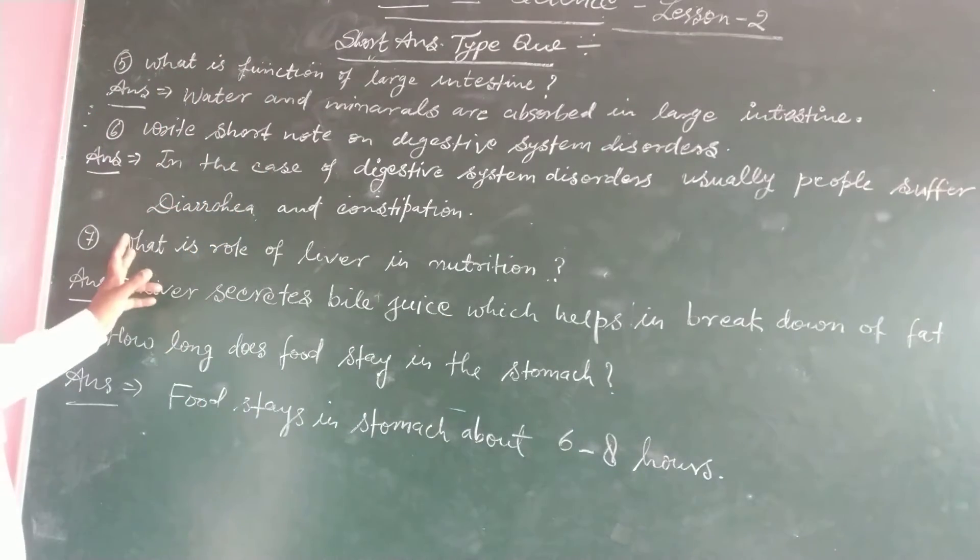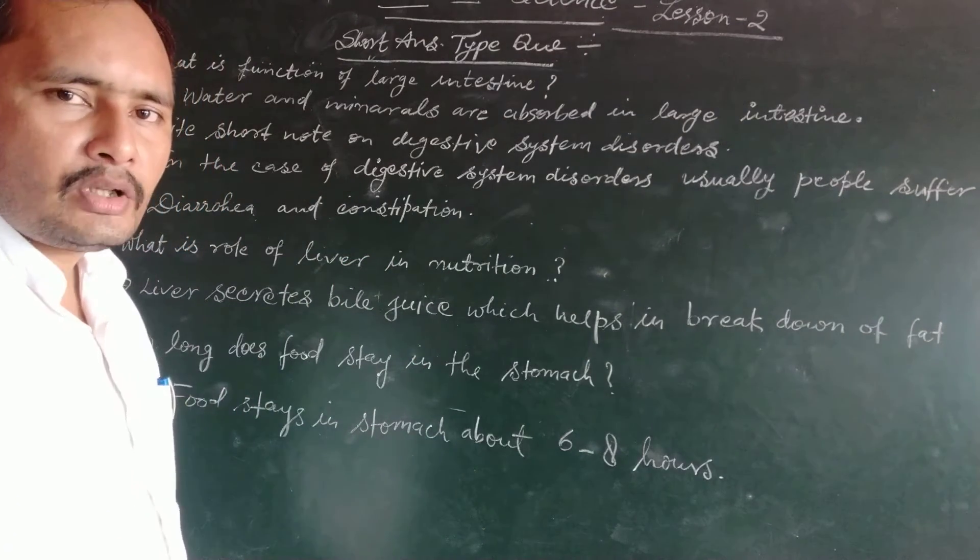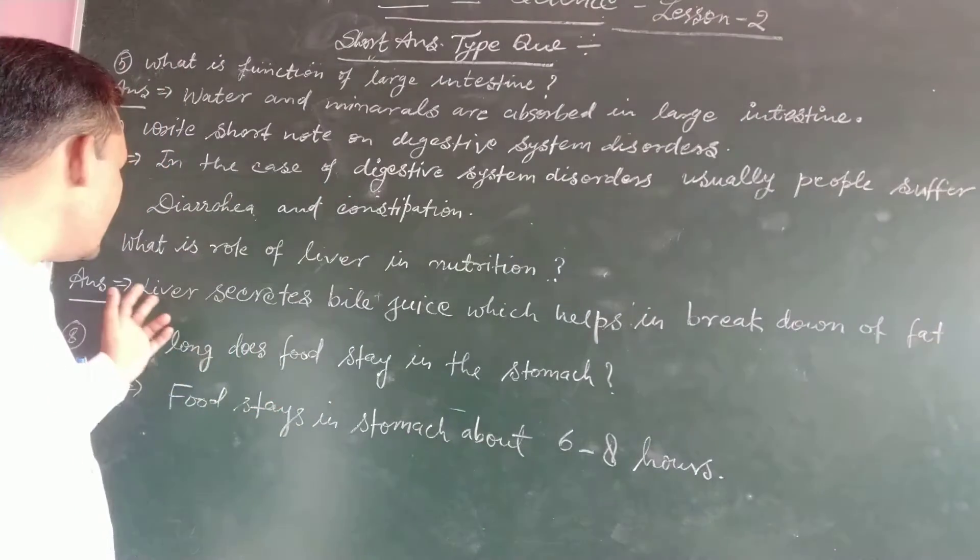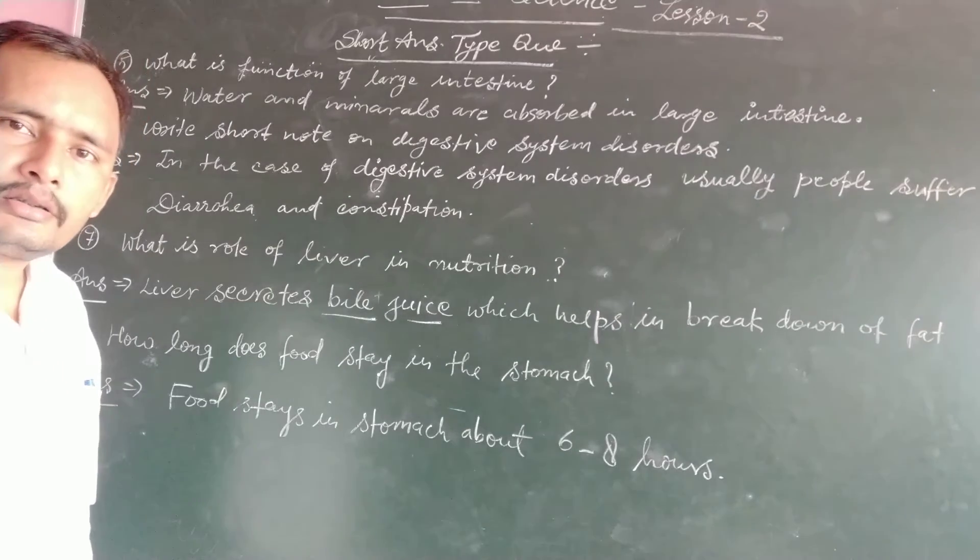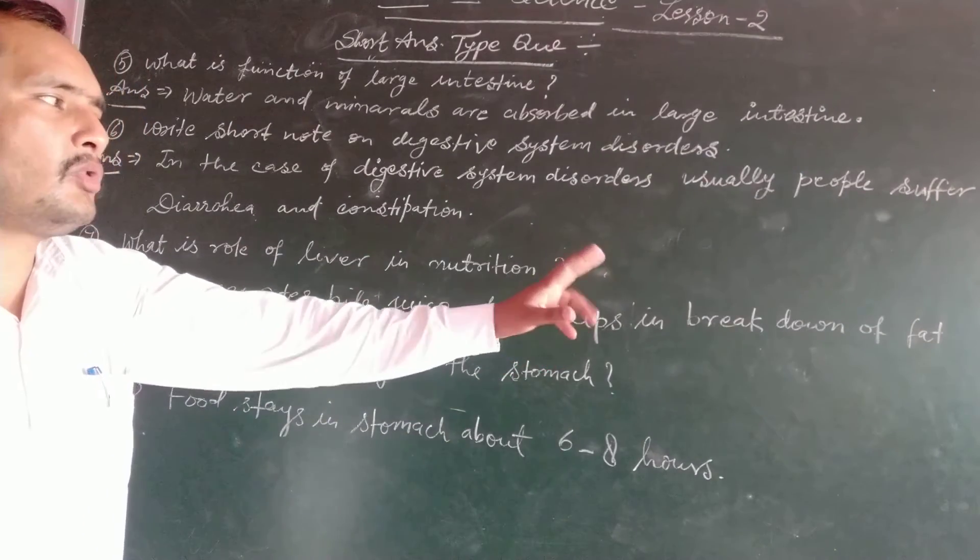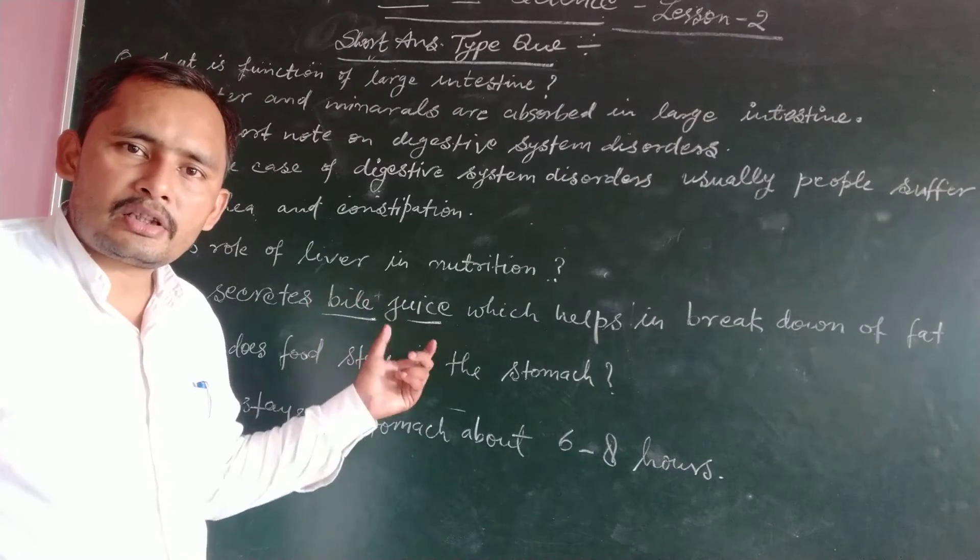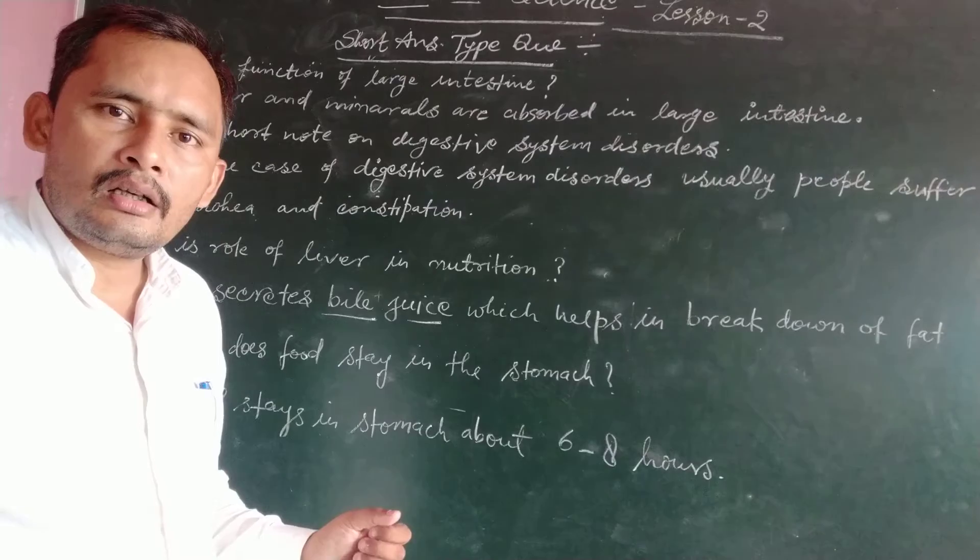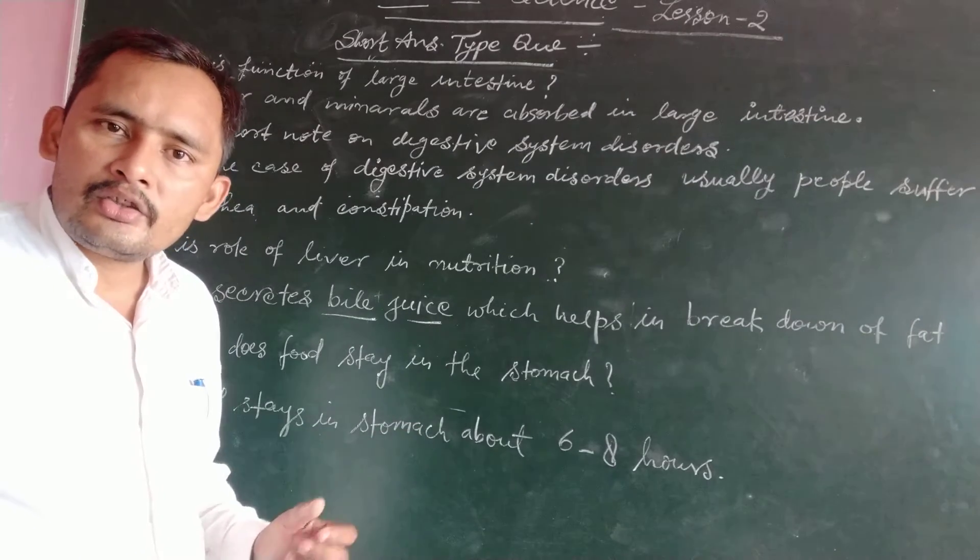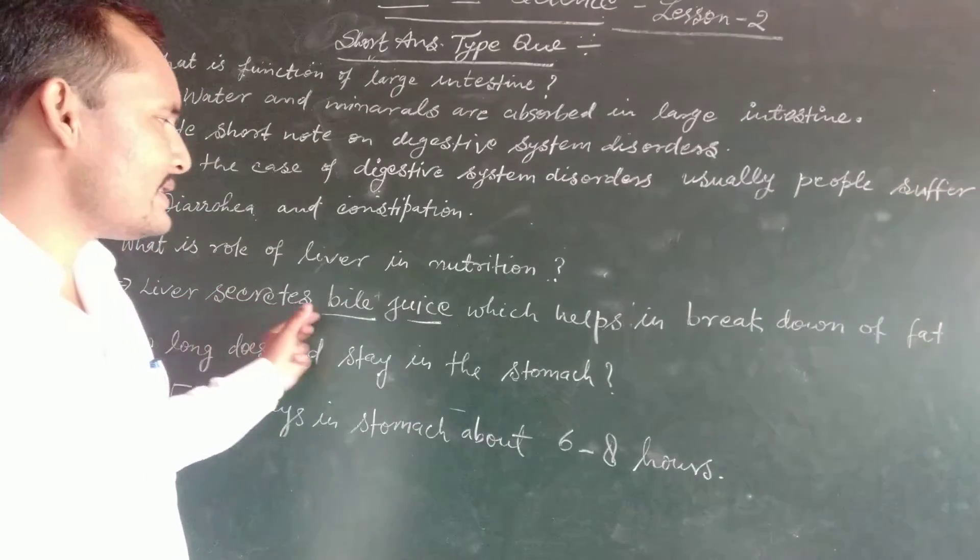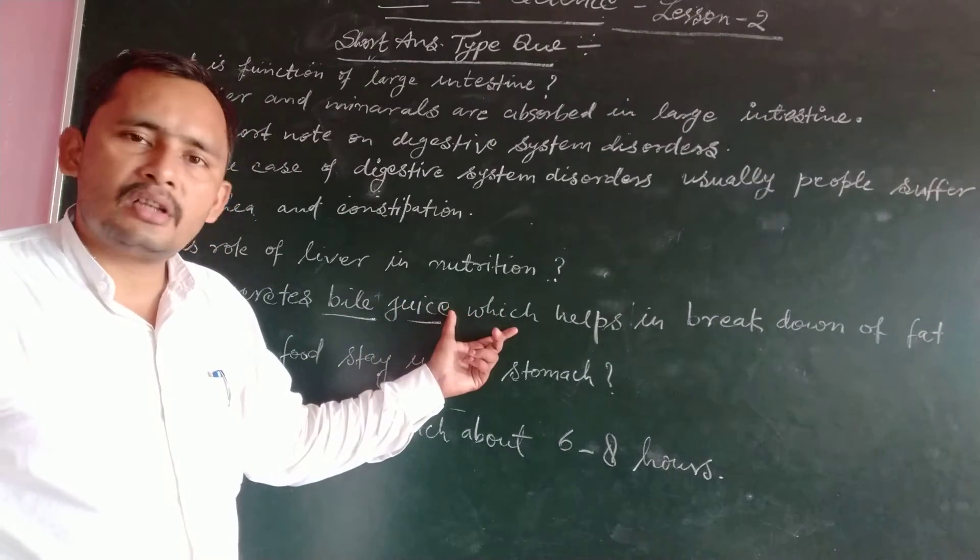Liver's role in nutrition. Liver secretes bile juice, very important part. Bile juice. Liver secretes bile juice which helps in breakdown of fat. When you want to extend the quality of your answer, you can write also liver secretes bile juice which is stored in gallbladder and during the process of digestion.